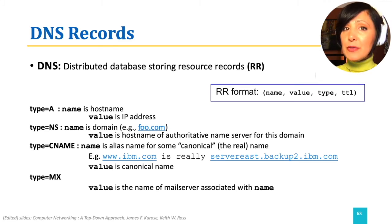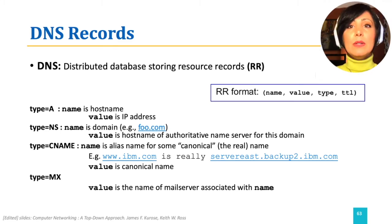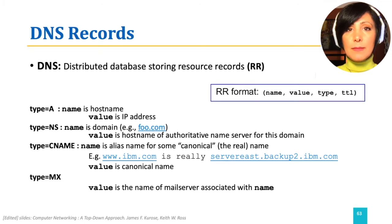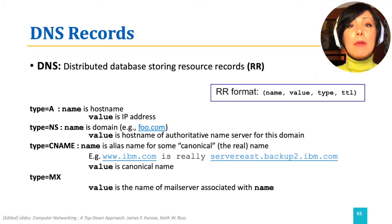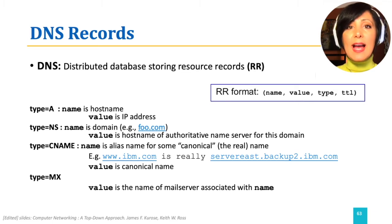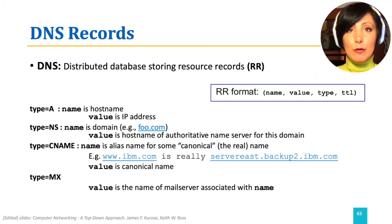Type could have different values. For example, it is A for hostname to IP address translation records, NS for name service type of records, CNAME for canonical to alias name translation, and MX for mail server records.